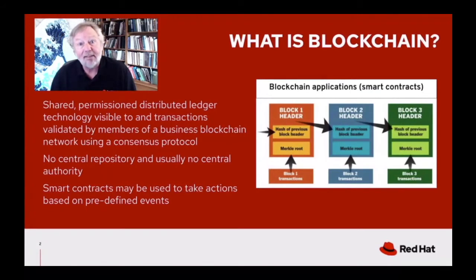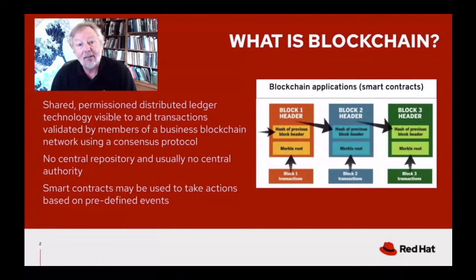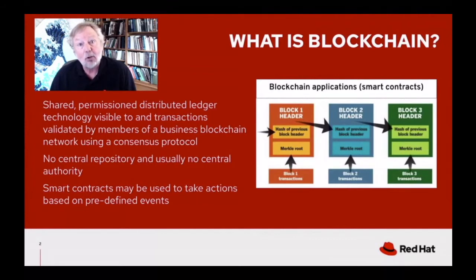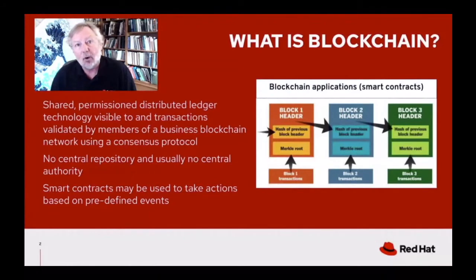In the case of permissioned blockchains, other types of consensus mechanisms that require a certain degree of trust among participants can be used instead. Essentially, you have voting nodes — not necessarily all members of the network — that decide whether a transaction is valid or not. There's no central repository; this is a distributed structure. And there's usually no central authority, although that is not an absolute requirement.